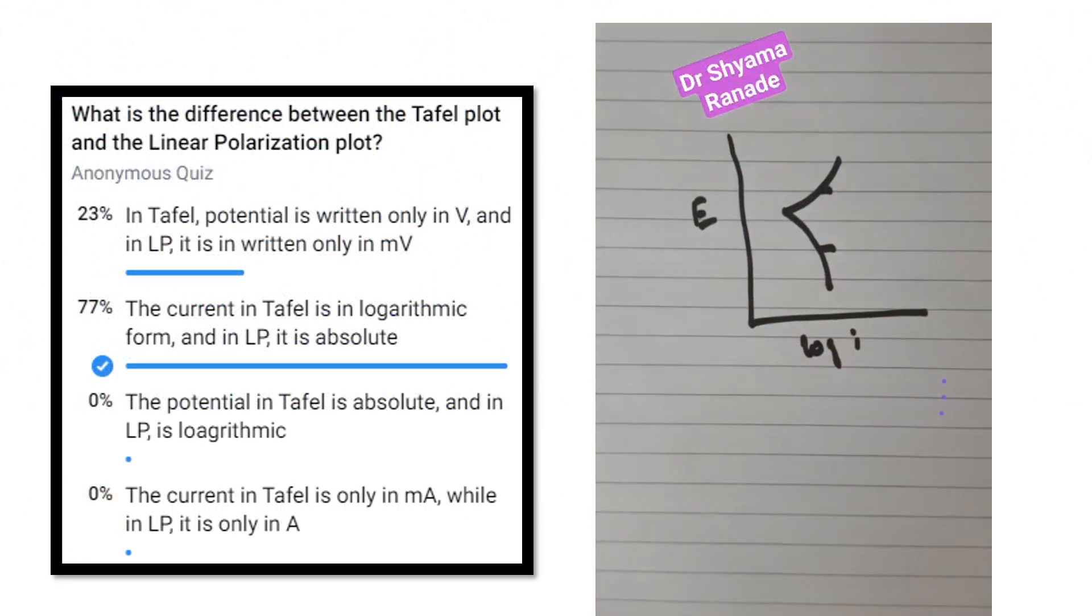Hello everyone, the question that I asked last time was: what is the difference between the Tafel plot and the linear polarization plot?